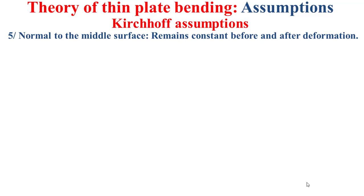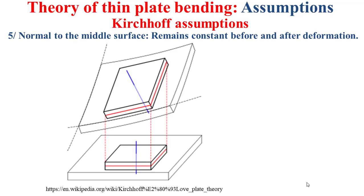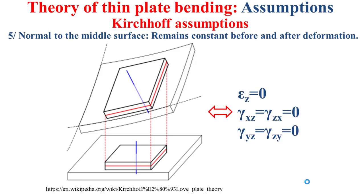The fifth assumption is directly attributed to Kirchhoff. It states that the normal to the middle surface remains normal before and after deformation, as depicted by the model in this slide. This model shows on the bottom the plate before deformation and on the top the plate after deformation. The middle surface is depicted in red and the normal to the middle surface in blue. This fifth assumption states that all strains associated with the z direction — the normal strain εz and the shear strains γxz and γyz — should be equal to zero.